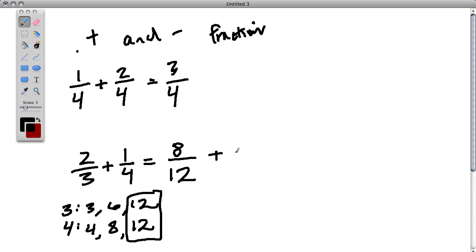Now the fourths, right here, 4 times 3 was 12, so 4 times 3 is 12, and then multiply the numerator also by 3. So 3 twelfths is 1 fourth.